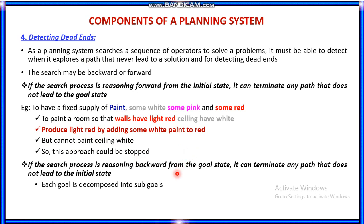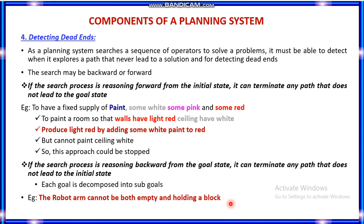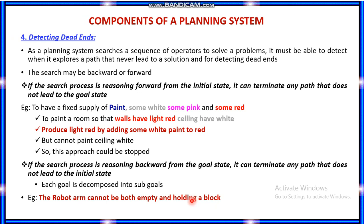If your process of reasoning is backward from the goal statement, you can terminate any path that does not lead back to the initial state. Each goal is decomposed into sub-goals. For example, a robot arm cannot be both empty and holding a block at the same time. Both cannot be true simultaneously — that type of reasoning is called backward reasoning.